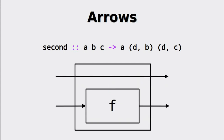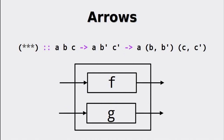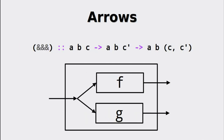If we can work on the first element, we are of course able to change the second element with the second function. The combination of first and second yields the triple star (***), which combines two arrows to act on the first and second element of the tuple independently.